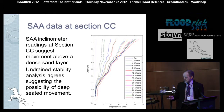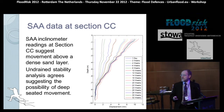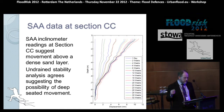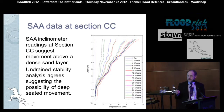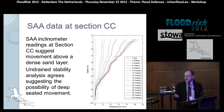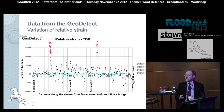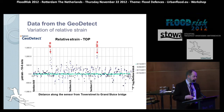At one section we picked up rather larger movement. An undrained stability analysis rather than a drained analysis suggests there may be some deep-seated movement at that particular location, though the movements are not worrying at this point in time. The fibre optic cable, measuring relative strain, also picked up a peak in movement very close to the same section where the shape acceleration arrays showed significant movement.